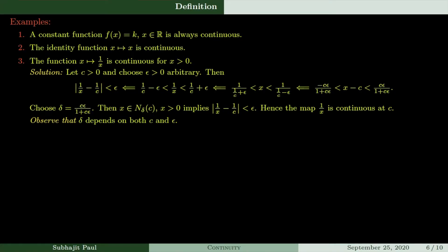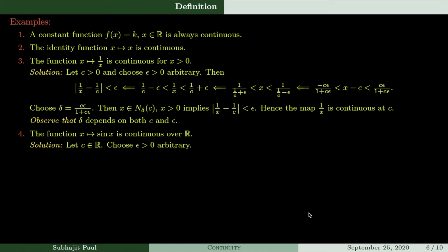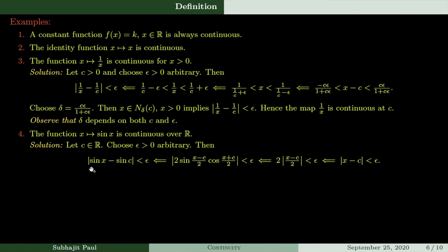Moving to the next example: the function f(x) = sin(x) is continuous over ℝ. Let c be any point and choose epsilon arbitrarily. We want to arrive at |sin(x) − sin(c)| < epsilon, and we imply that from a series of manipulations — exactly as we did in sequences and limits.